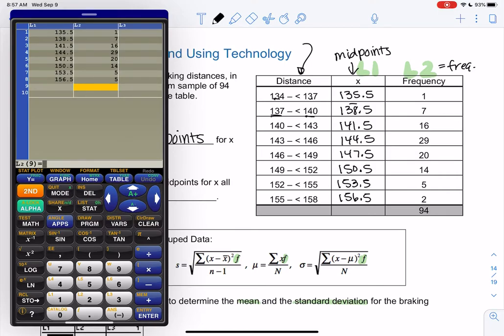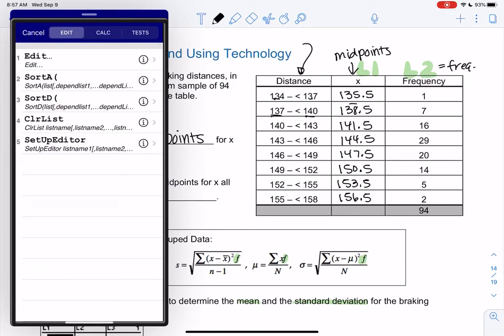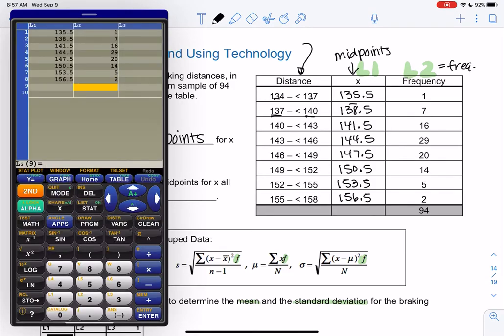So anytime you have frequencies, you have two lists. So you're going to go to our new favorite menu, stat, edit, and we're going to enter the data into L1 and L2. So number, enter, number, enter, number, enter. Remember, if you want to get rid of a list, go to the top and hit clear, enter. That'll erase it. I'm not going to do that because I already have the data in here. So you should have two lists, L1 and L2. If you ever lose L1 or L2, I did make a video about it. But you can go to stat, and you can go down to setup editor, and hit enter, and it'll make it come back.